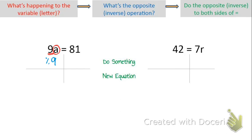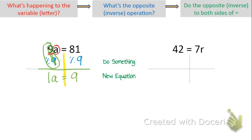If you do that on one side of the equation, you have to do it on the other side too. So on both sides I'm going to divide by 9. On the left side, I have 9a divided by 9 — the two 9s cancel, and 9 divided by 9 is 1, so I'm left with 1a. On the right side, 81 divided by 9 is 9. So I have 1a equals 9, which is the same as a equals 9.